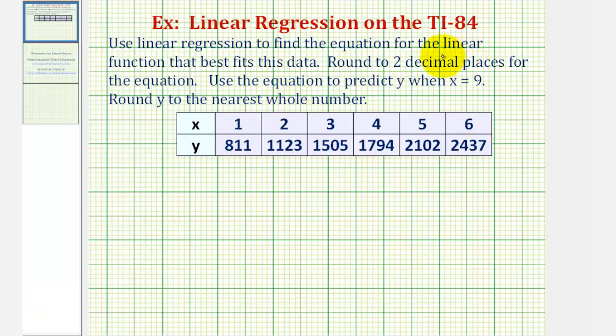So the linear function that best fits this data is y = 324.46x + 493.07. This is our regression equation.